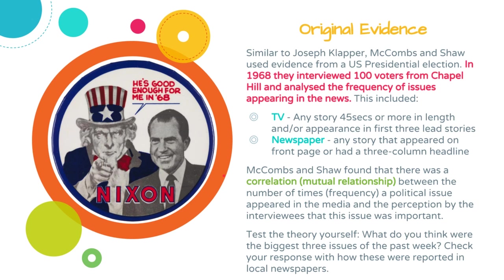Think about testing this theory yourself. Think about news events from the last week and write down the three biggest issues you perceive as happening. Then go and see how these were reported in the media you were actually exposed to this week. Is there a correlation between what you think are the top three issues and how often something appeared? You might find that family members who access news from different media sources have a different list, because you're exposed to different media organisations that set very different agendas.